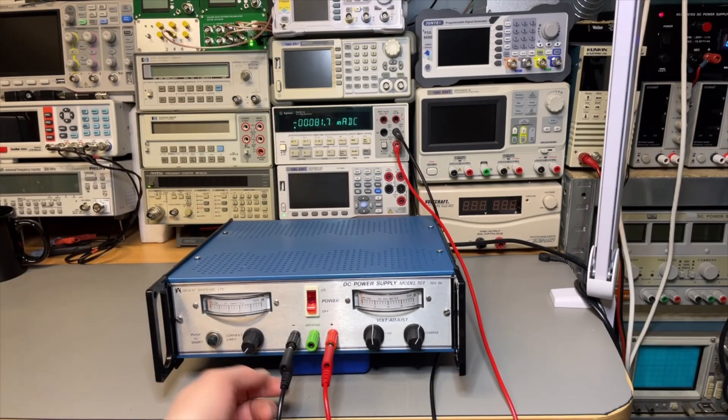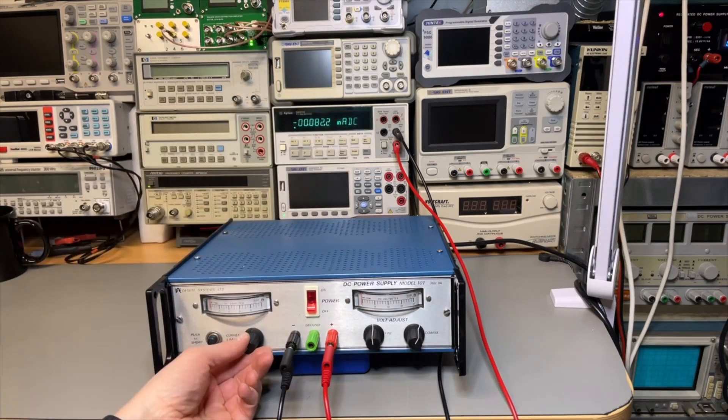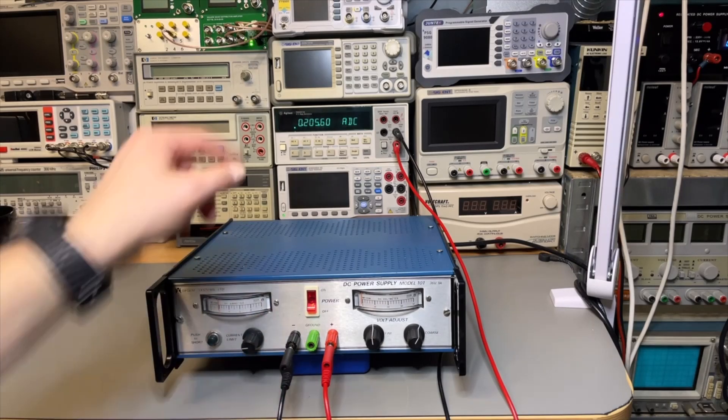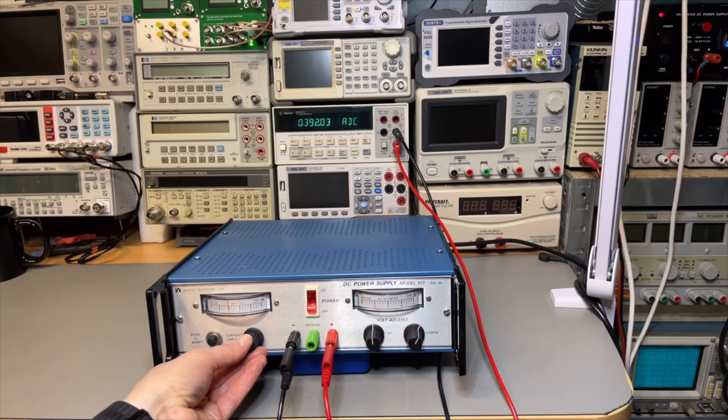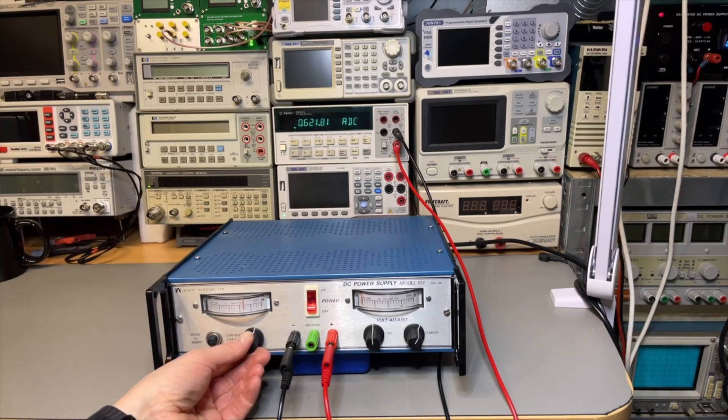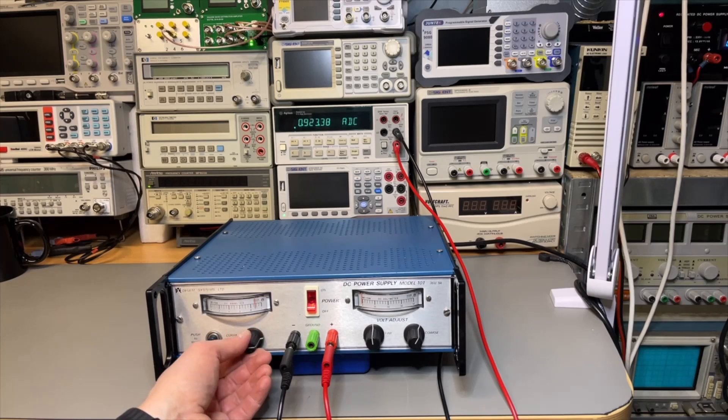Checking now the current limit so I just put it short circuit. I should now have about 200 millis, it has 400 millis, 600 millis. Look at that. Current limit is doing it very nicely. 800 and it should go to almost one amp. Yes.